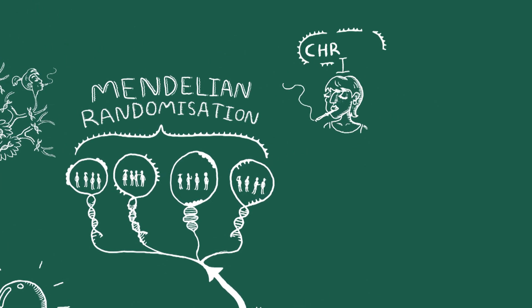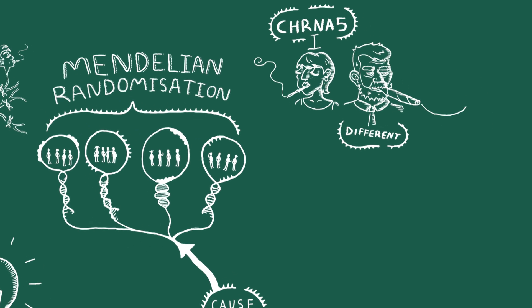For example, smokers who carry one version of a gene called CHRNA5 tend to smoke less heavily than those who carry a different version.